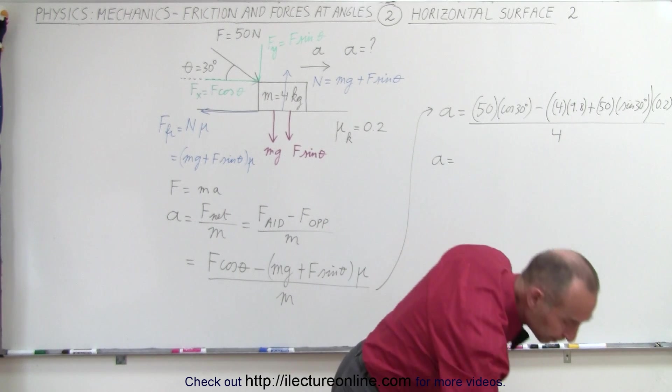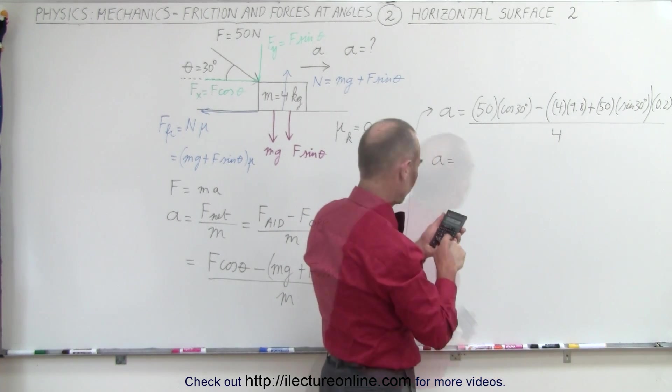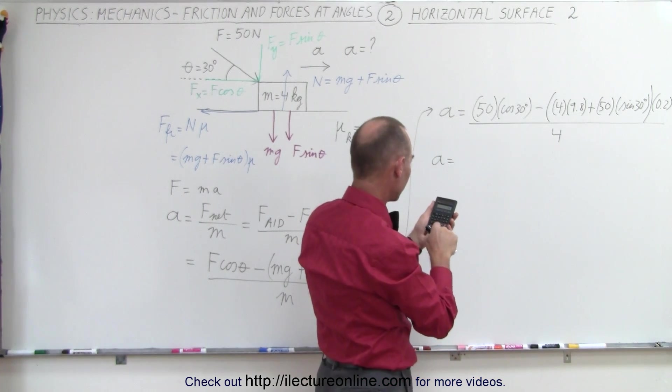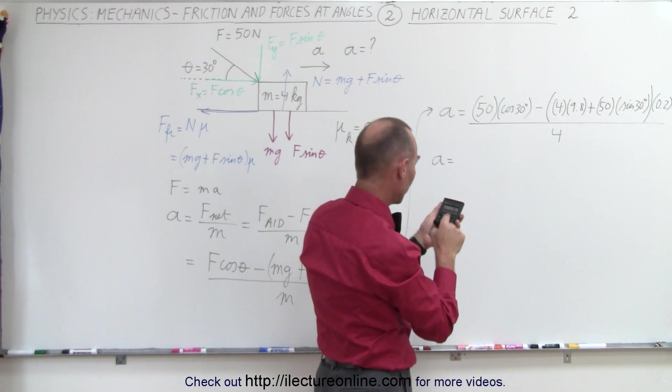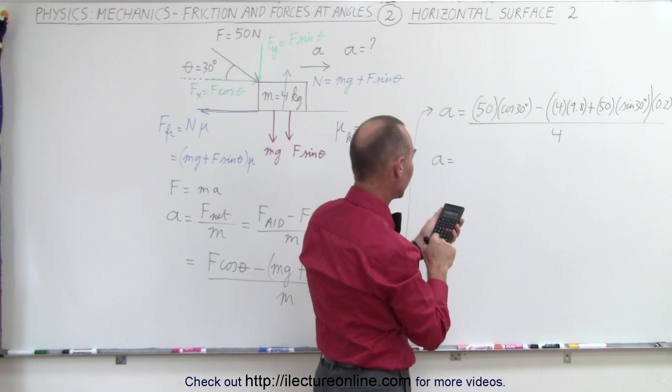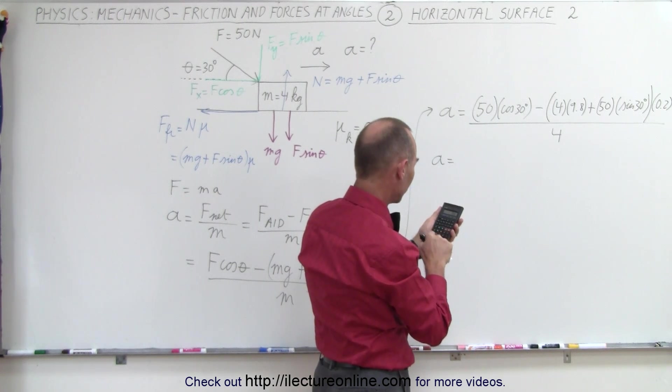So the acceleration equals, starting from the back, 4 times 9.8 plus 50 times sine of 30, which is 0.5, so plus 25, and we multiply that times 0.2.